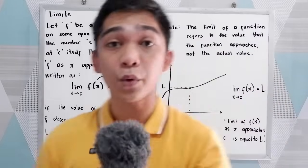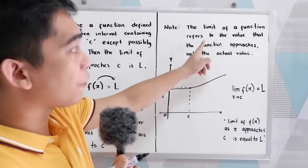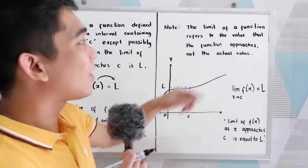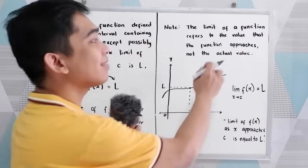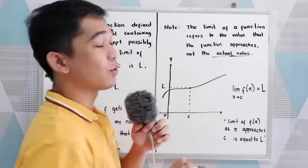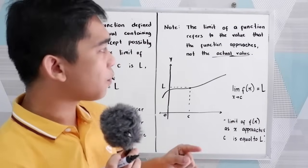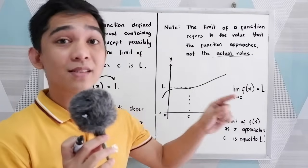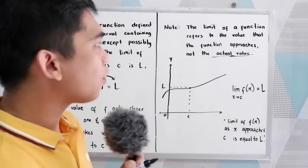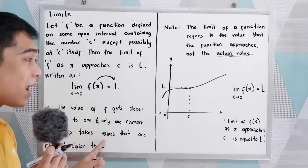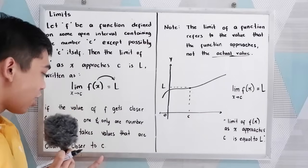To understand, take note of this: the limit of the function refers to the value that the function approaches, not the actual value. Because if you're just going to get the actual value, that is the value of the function. But here, in our limits, we're going to have the values as x approaches our constant.